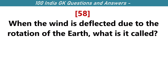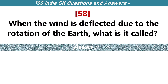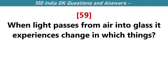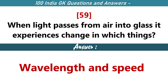When the wind is deflected due to the rotation of the Earth, what is it called? Geostrophic wind. When light passes from air into glass, it experiences a change in what? Wavelength and speed.